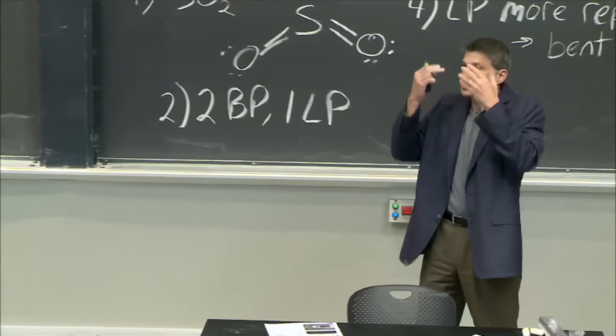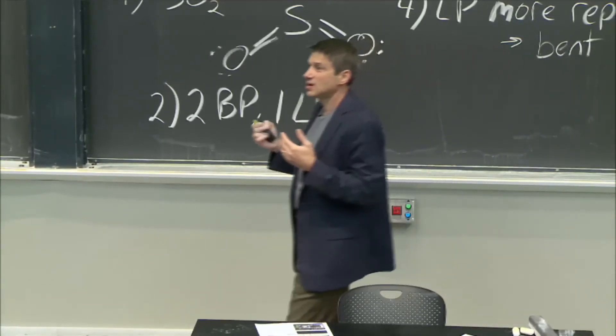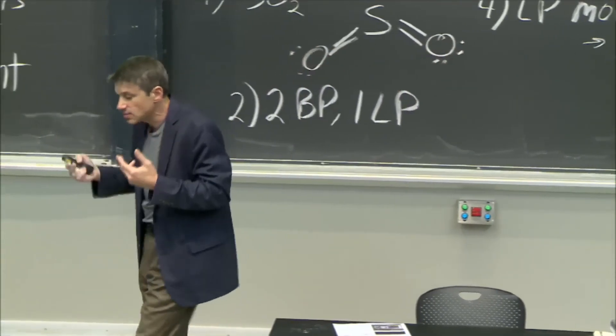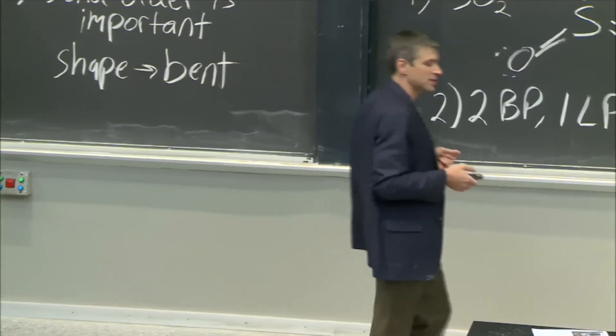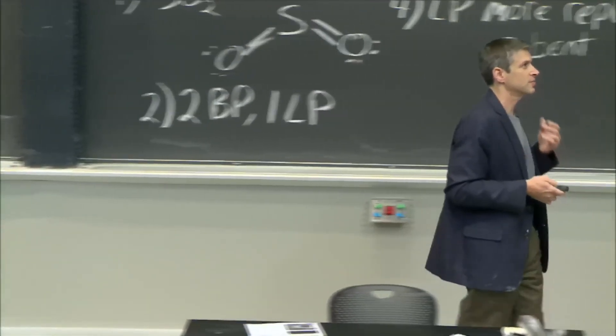It means that in our tongues, in our noses, we must have chiral, the ability to determine the chirality. It's pretty cool. So shape is critical, and this is one example of why.